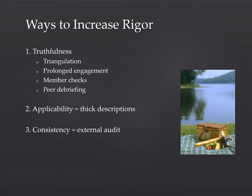To increase truthfulness in qualitative design, we can triangulate our research methods, which means gathering information from more than one method and more than one source. We can have prolonged engagement so we better understand the situation, culture, or whatever we're examining. We can provide member checks where we engage with the person or situation to make sure we're gathering correct information. We can also do peer debriefing, either between participants or as a researcher doing peer debriefing with another researcher.